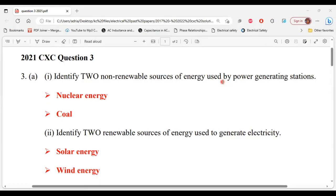Welcome back again guys to E-Learning Hub where I'm going to go through and explain the solutions for question three from the 2021 CSEC electrical and electronic past paper. So let's begin part one of A. It says identify two non-renewable sources of energy used by power generating stations.